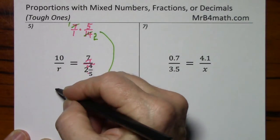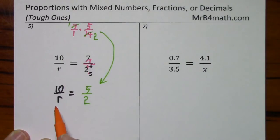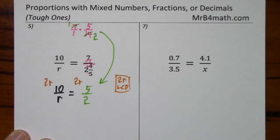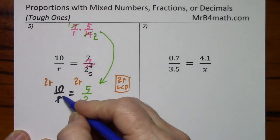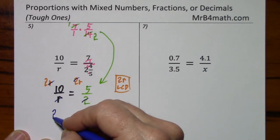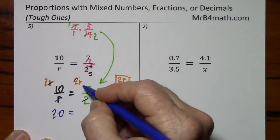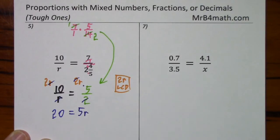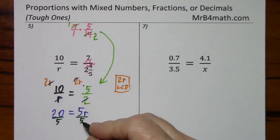So we have 10 over r. I want to get the variable out from here. So I'm going to multiply by the LCD, which is 2r. And here the r's cancel. The 2's cancel. You're left with 2 times 10, or 20, is equal to 5r. I want to get rid of the 5, so divide by 5. Those cancel. We have r is equal to 4.